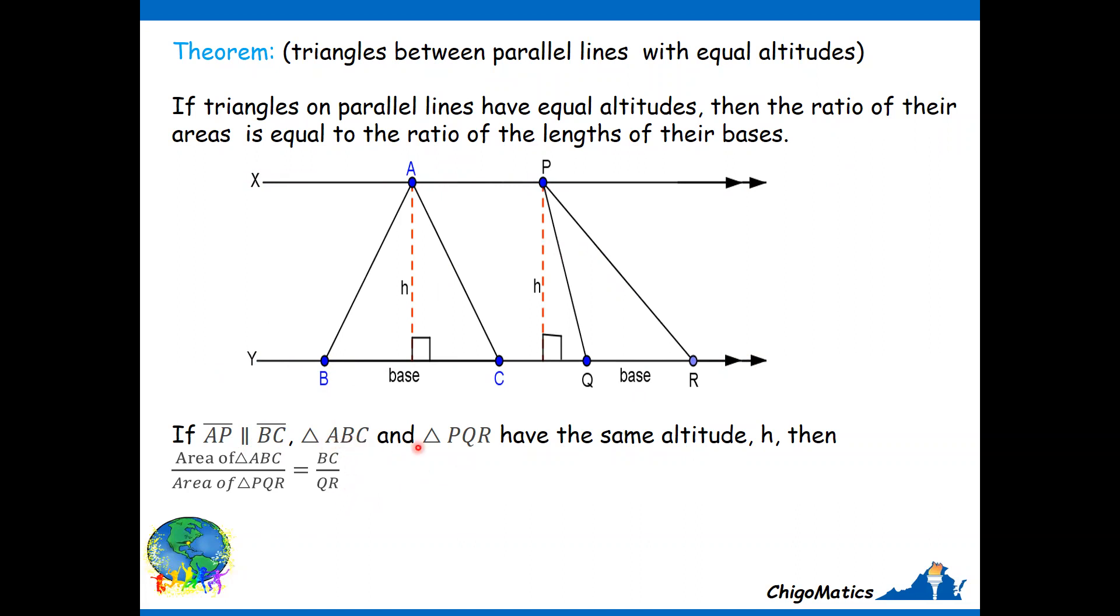Triangle ABC and triangle PQR have the same altitude height, which is H. Then we can conclude that the area of triangle ABC over area of triangle PQR equals the base BC over the base QR.